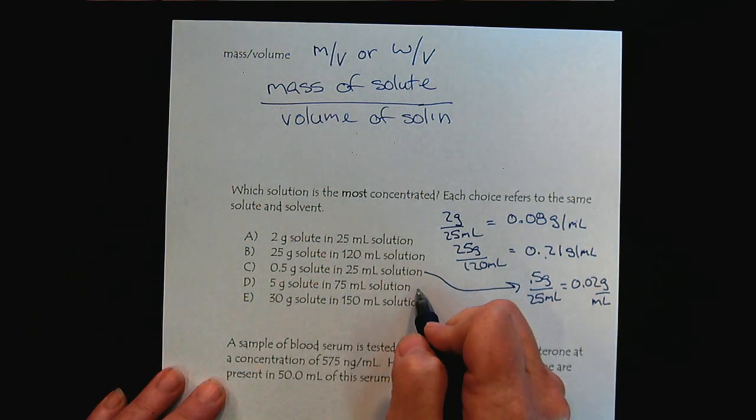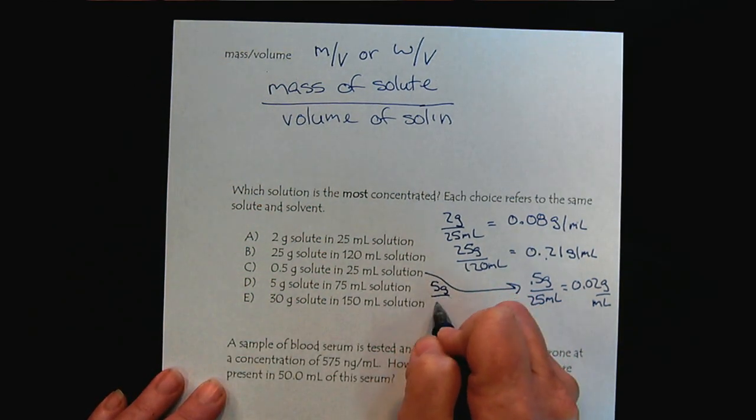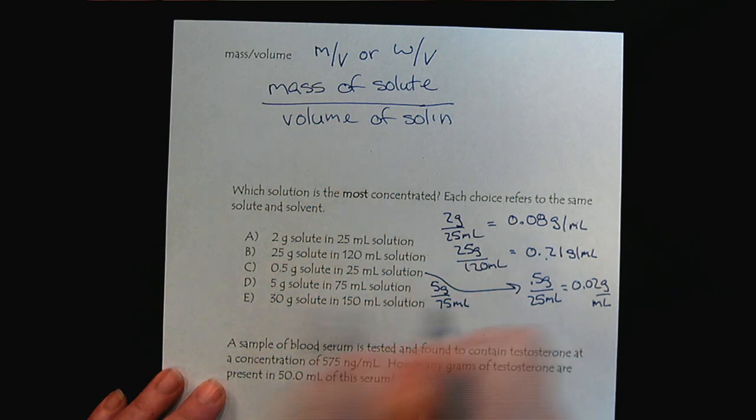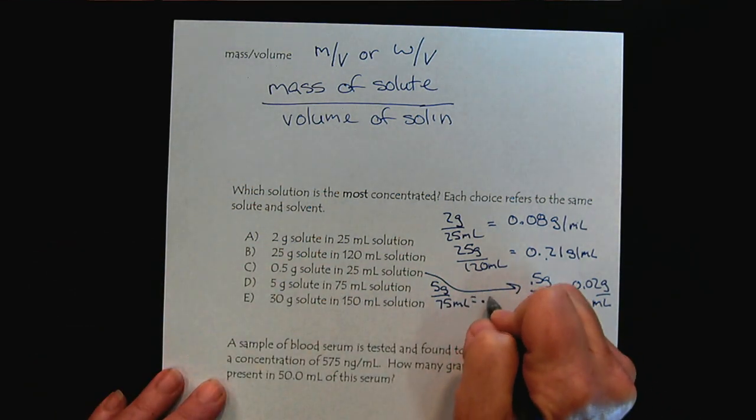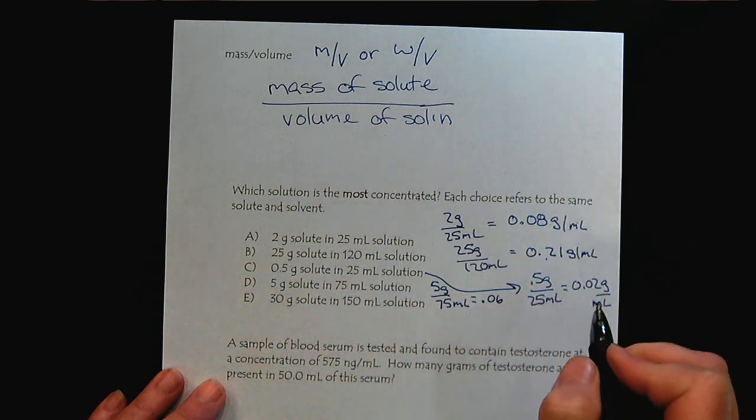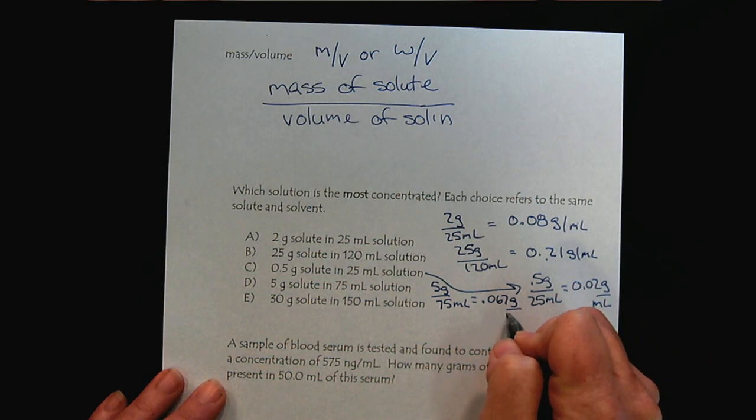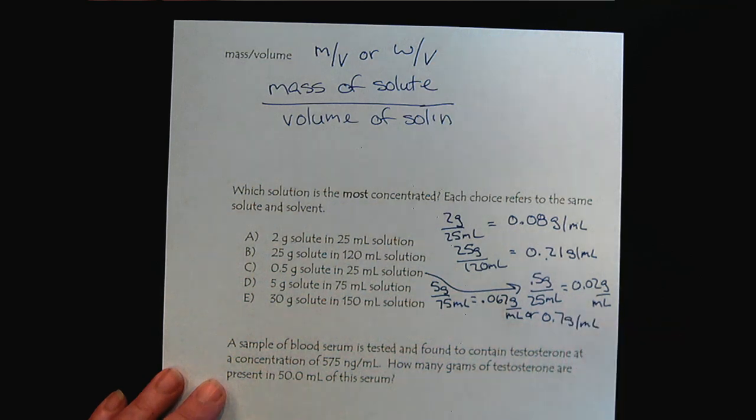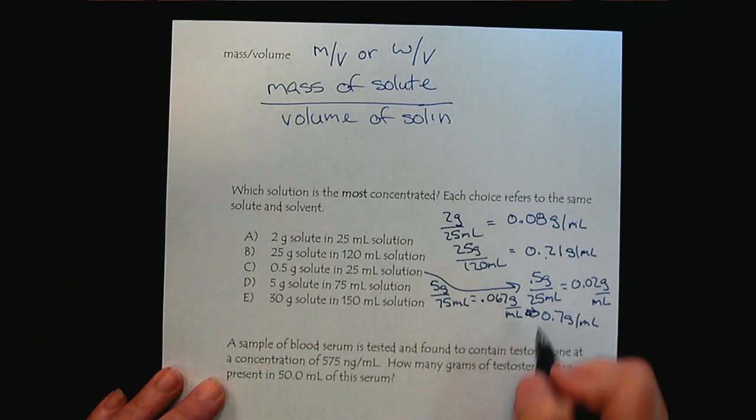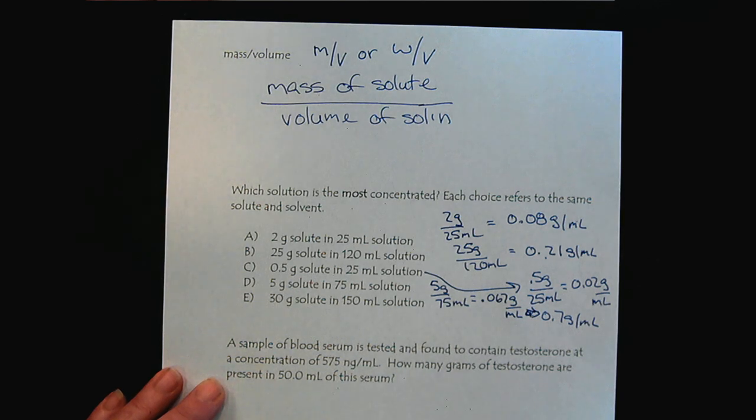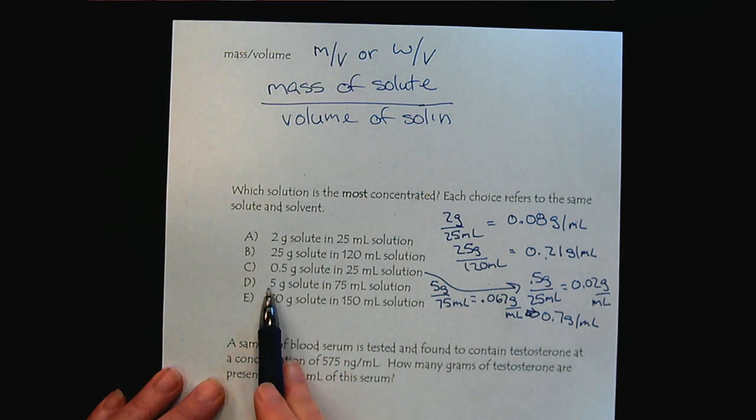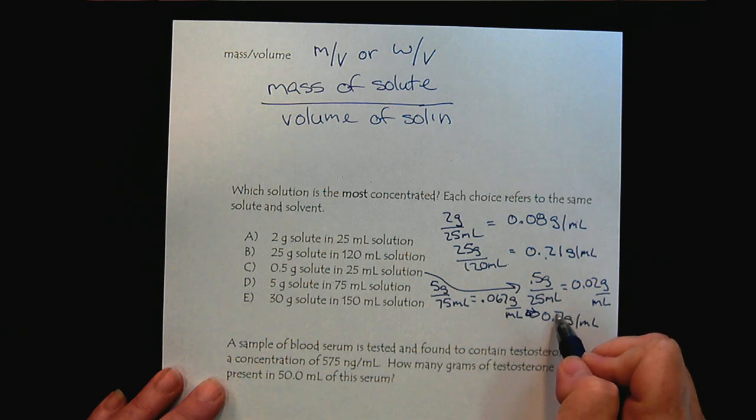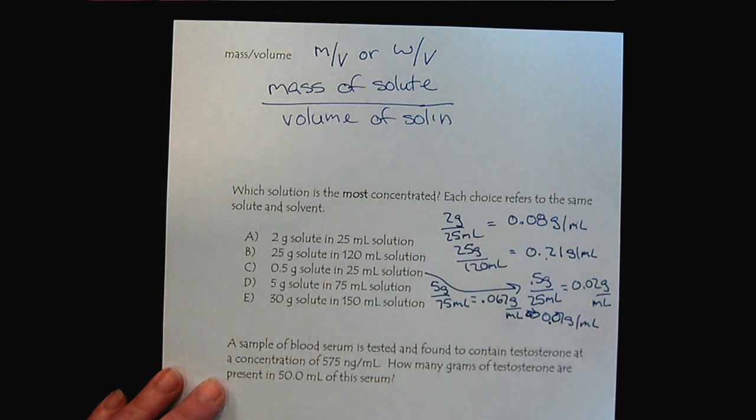When we look at D, we have 5 grams over 75 milliliters. That would be 0.067 grams per mL, or 0.7 grams per mL if we are paying attention to sig figs. So far, solution B is the highest concentration.